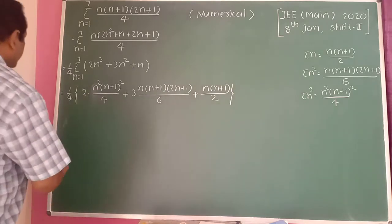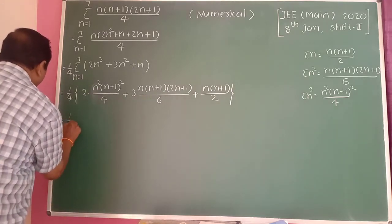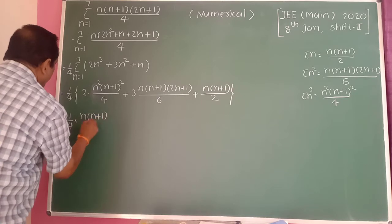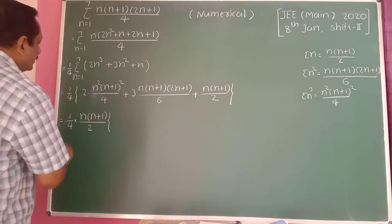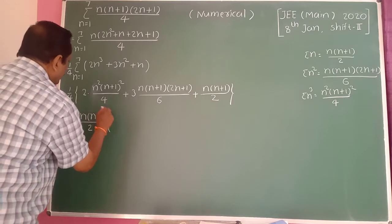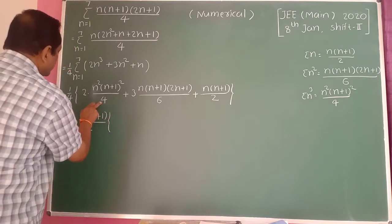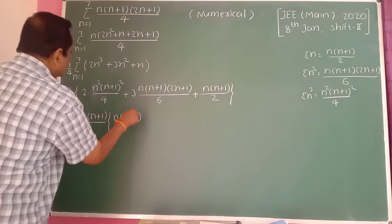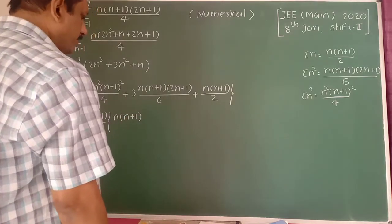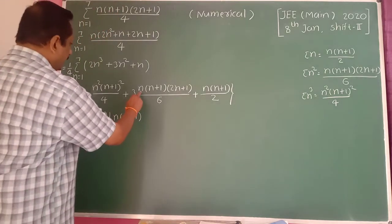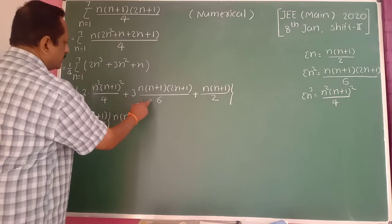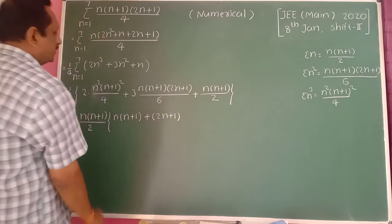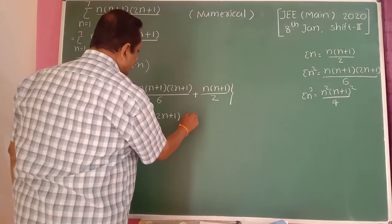Taking n into n plus 1 divided by 2 as a common factor, and simplifying: after cancellation, remaining terms are n into n plus 1 from the first term, plus 2n plus 1 from the second term, plus 1 from the third term.